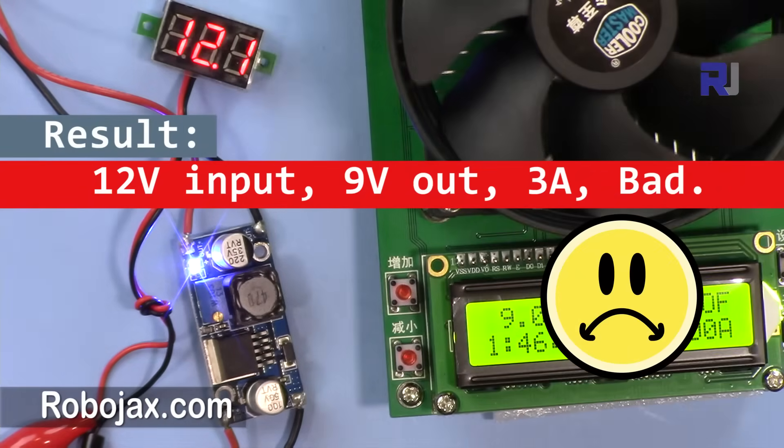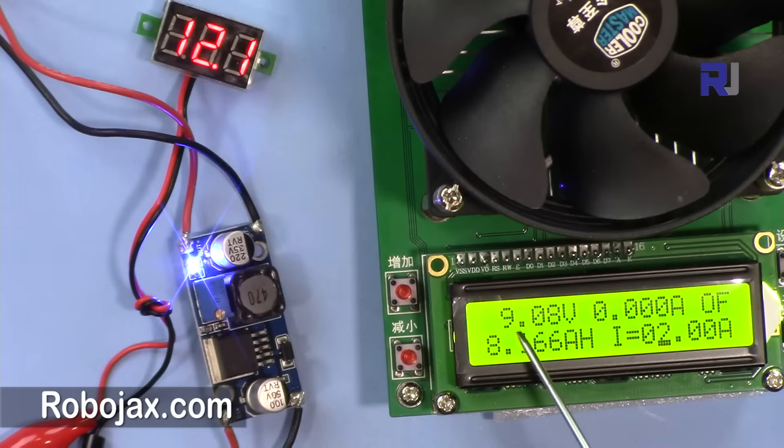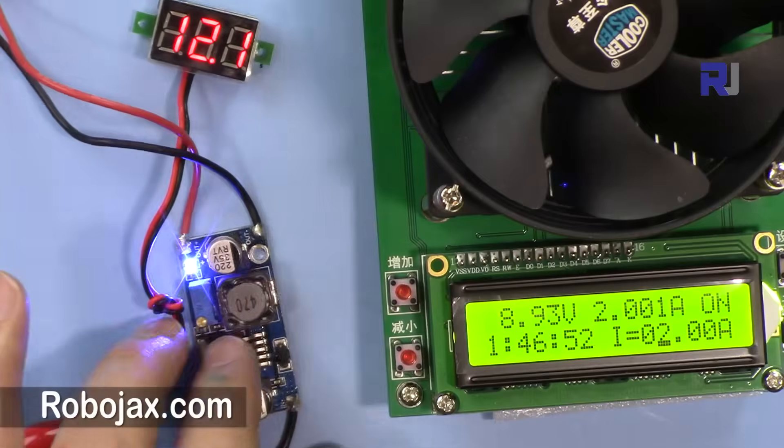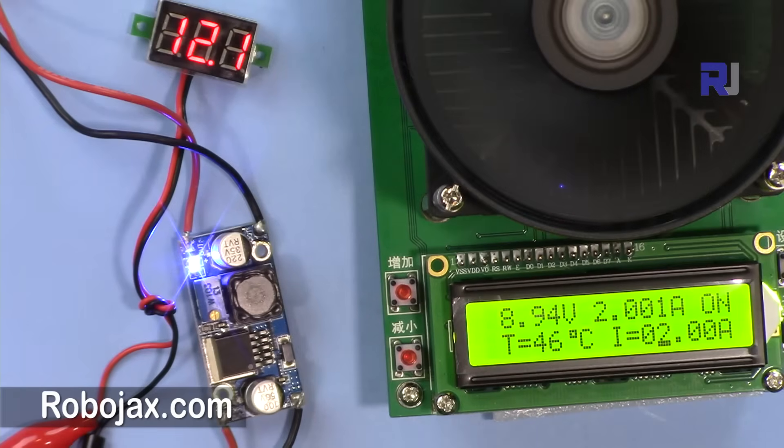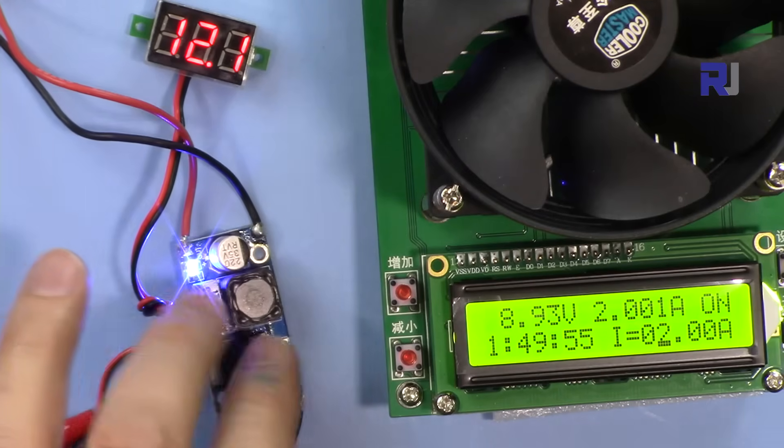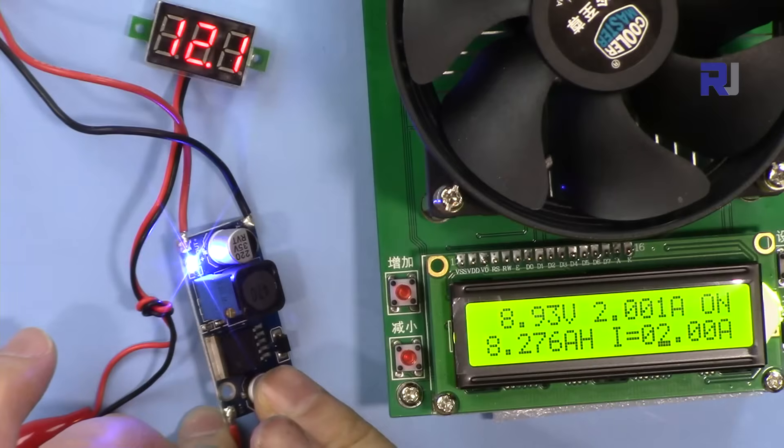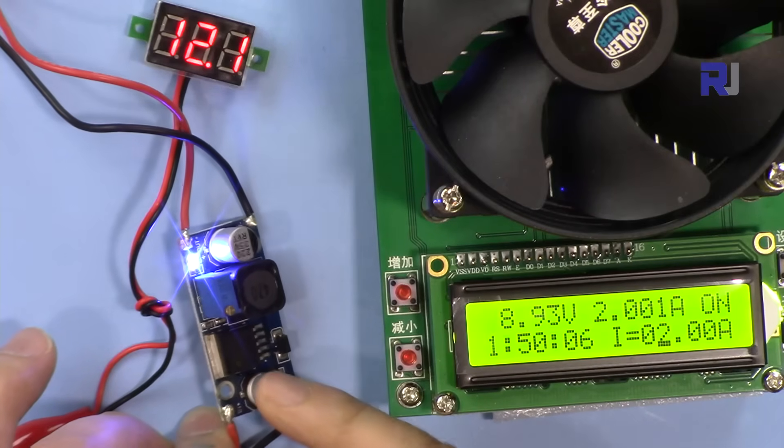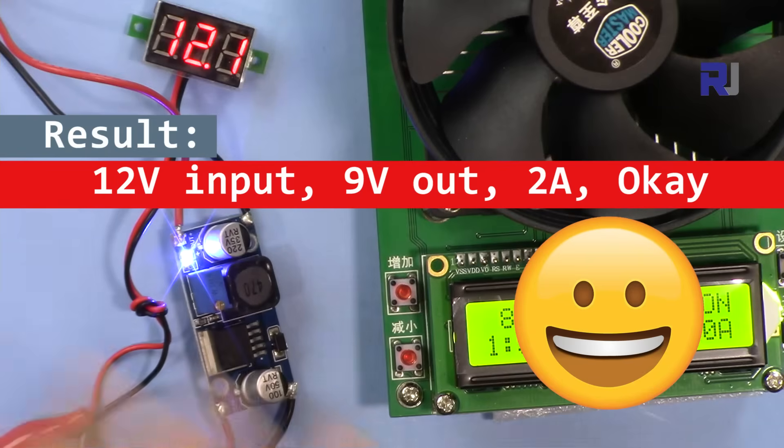So conclusion: 12 volts input, 9 volts output, 3 amp, not good. It died. Let me turn it on. 12 volts input, 9 output, this is output 9 volts and then 2 ampere. So the device, the module is hot but not that hot because I can put my finger here.